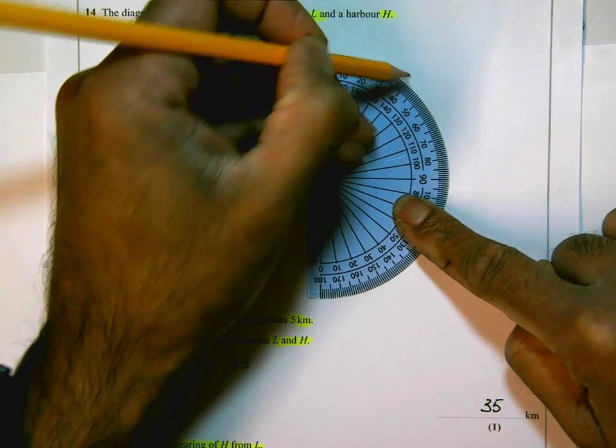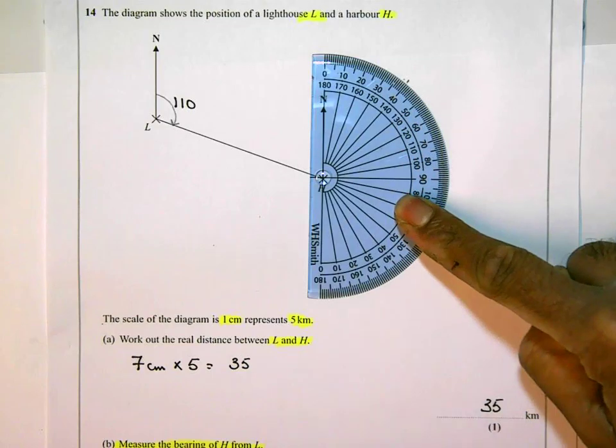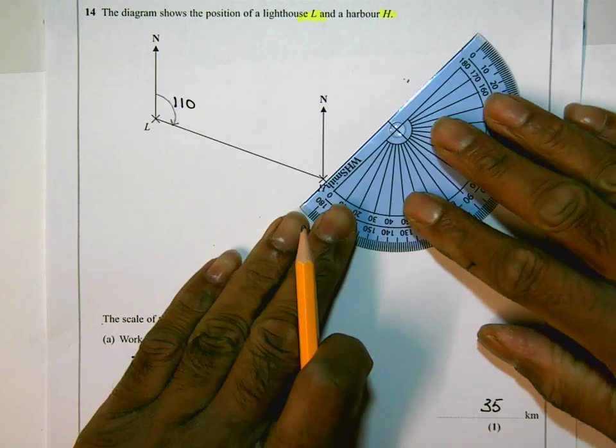And I'm going to draw a line from H through that. So that angle is 40 degrees.